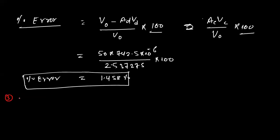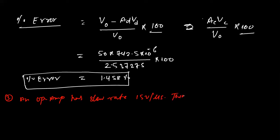Now the third question is based on slew rate. Question number three: An op-amp has a slew rate of 15 volts per microsecond. Calculate its full power bandwidth for a peak output voltage of 10 volts.